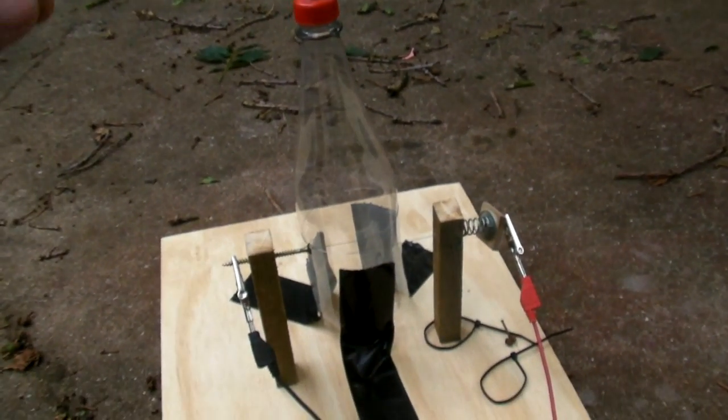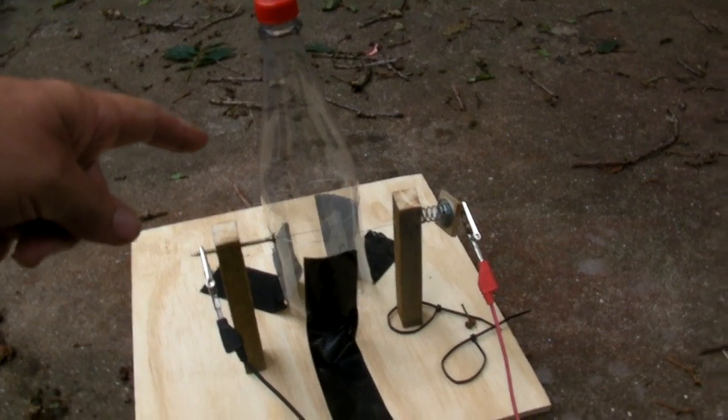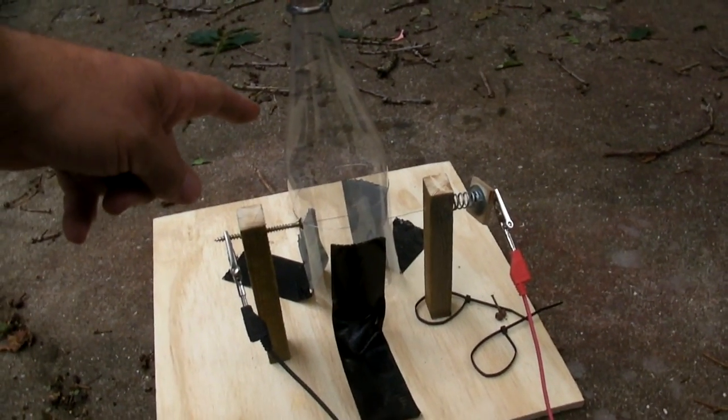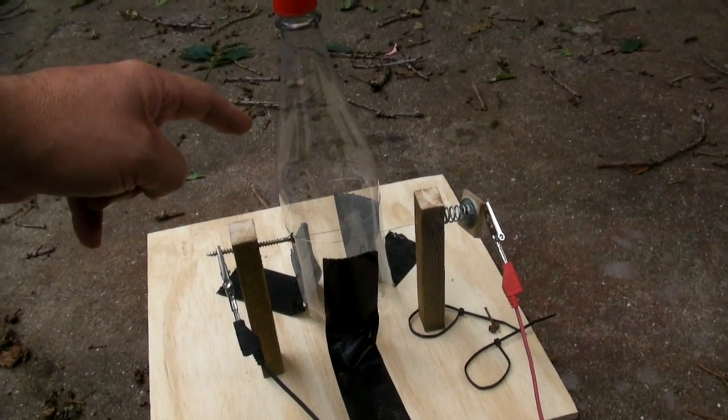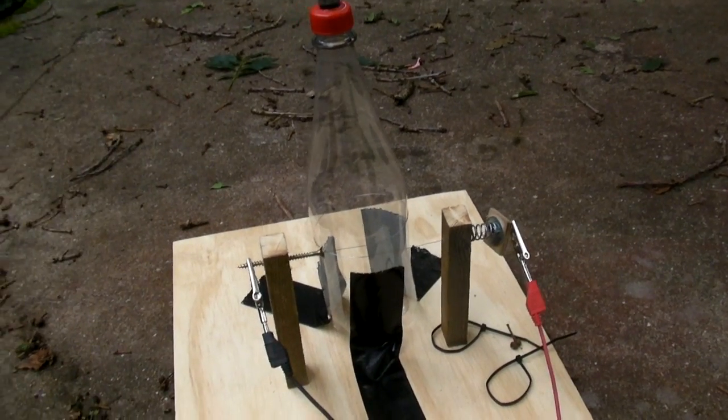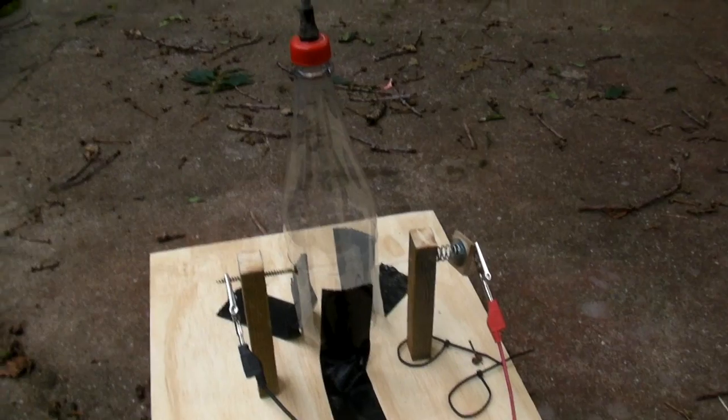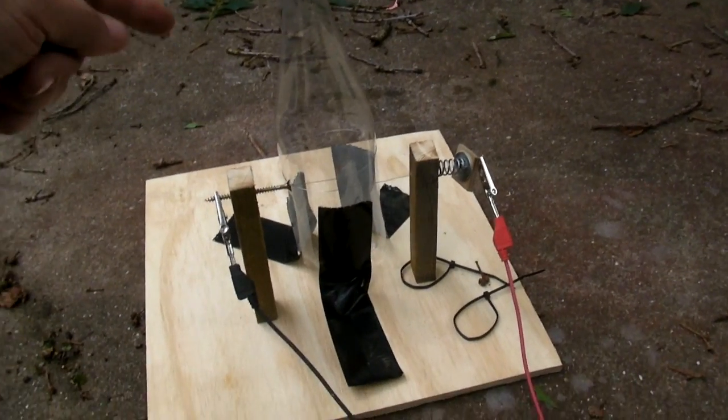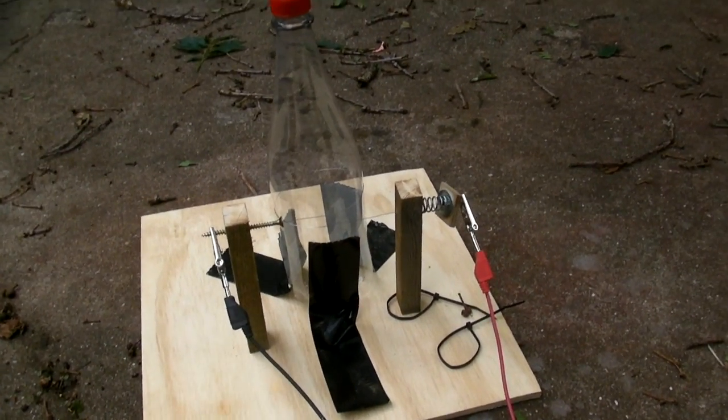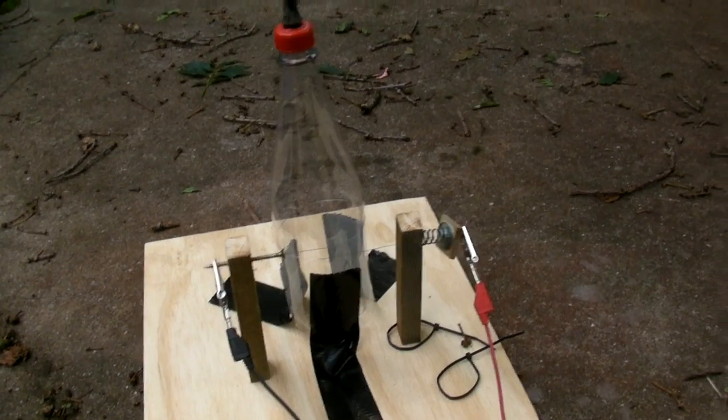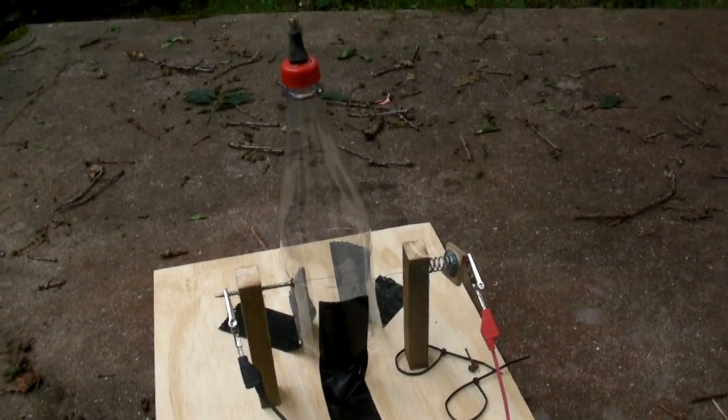Now the interesting thing, although this looks rather innocuous, is in this bottle there is actually the equivalent of about half to three quarters of a gram of dynamite in terms of energy. That's because we've got air in here pressurized to 90 pounds per square inch. So obviously the higher the pressure, the more energy that's stored.